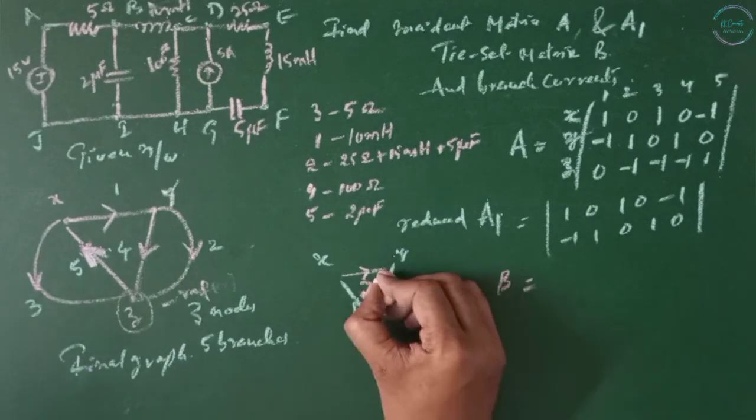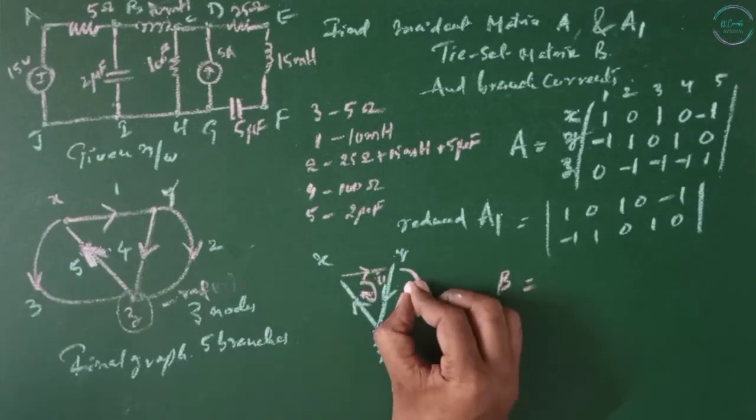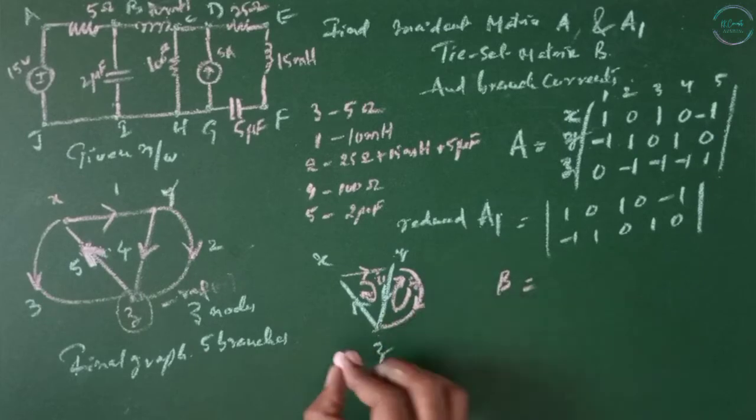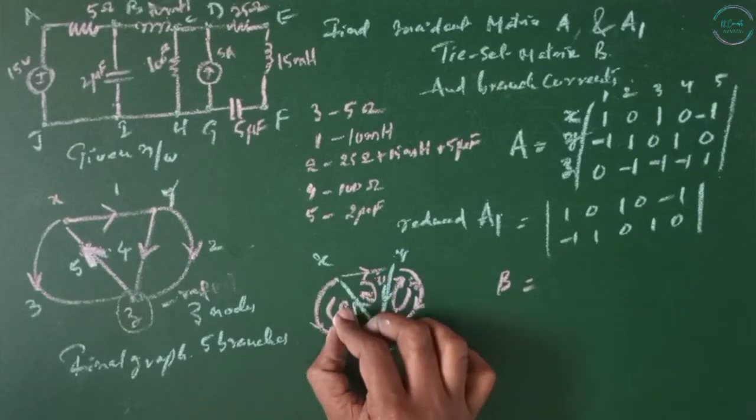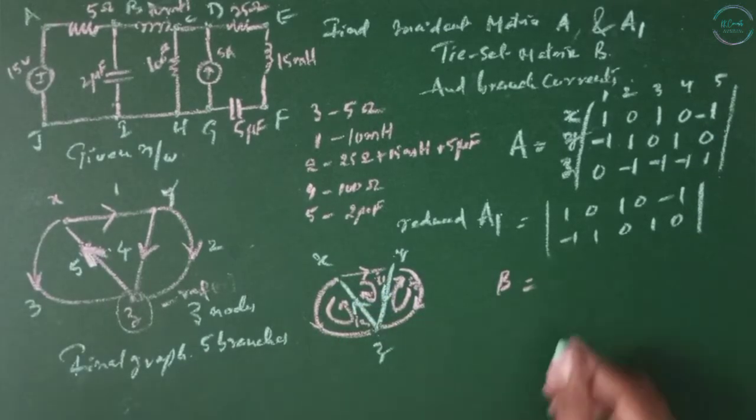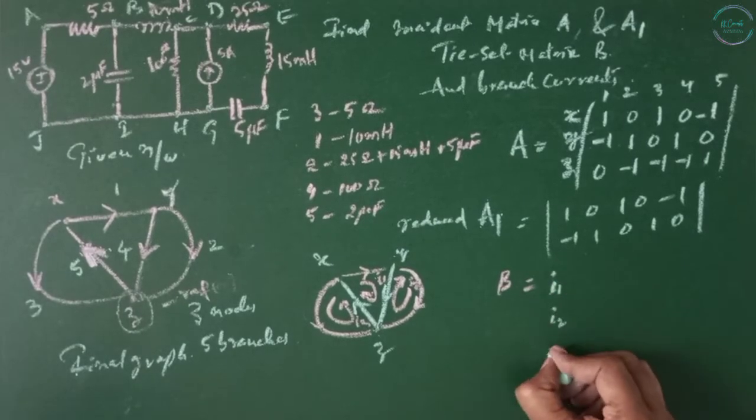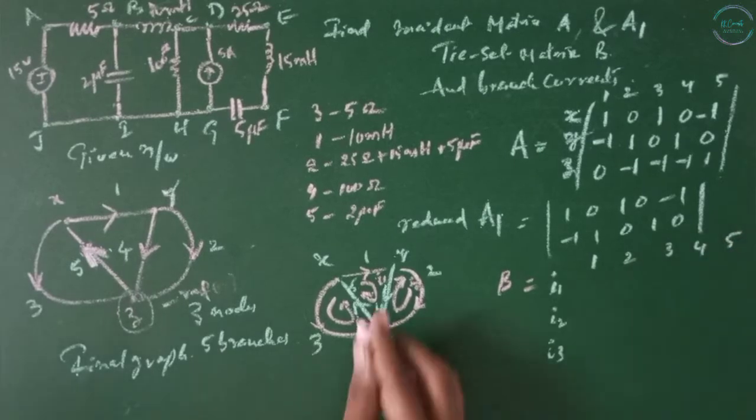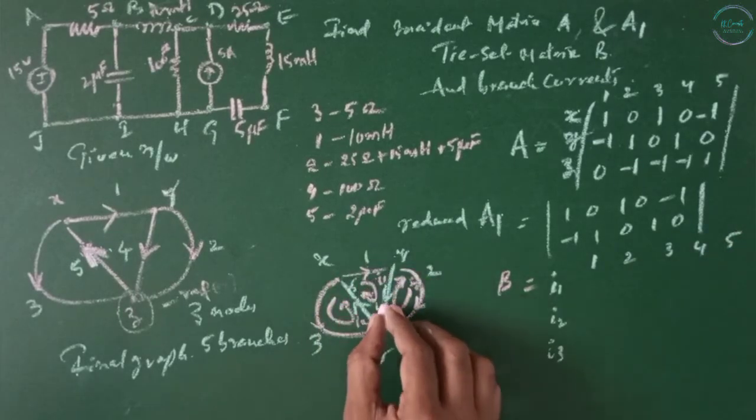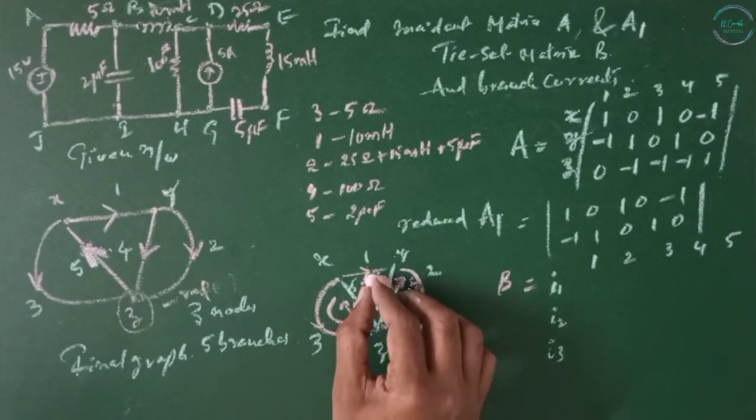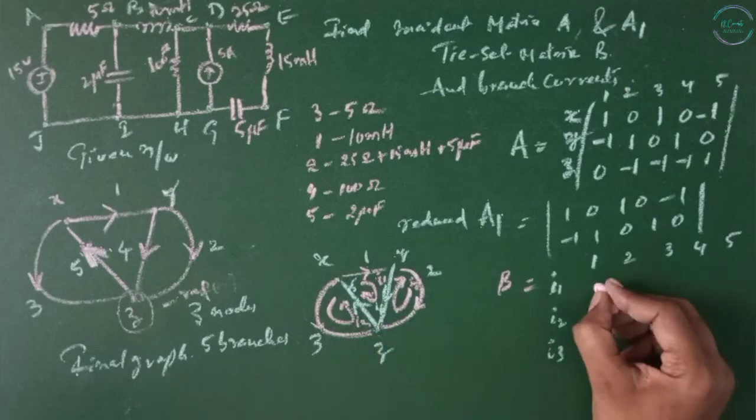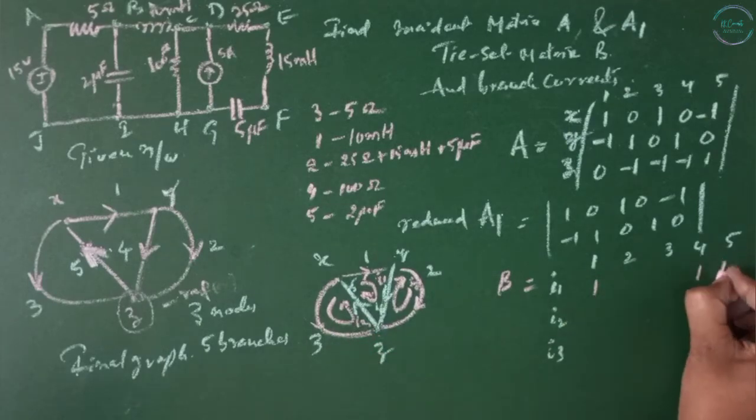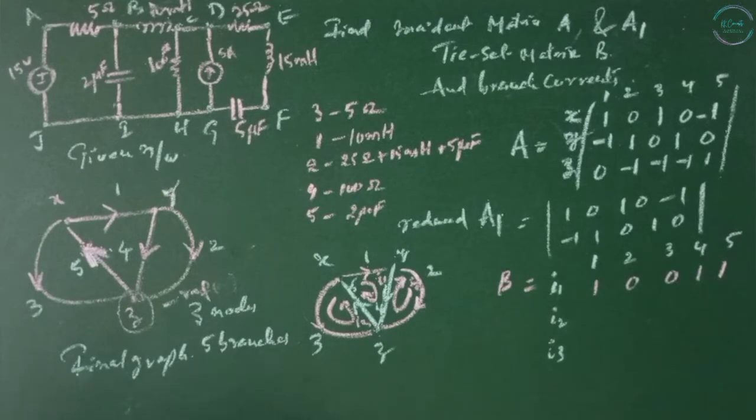This is I1, this is I2, this is I3. Then I1, I2, I3 for branches 1, 2, 3, 4. The first loop is between 1, 4, 5 and the directions of 1 and 5 are similar so 1, 4, 5 directions are same and 2, 3 are not in the loop.